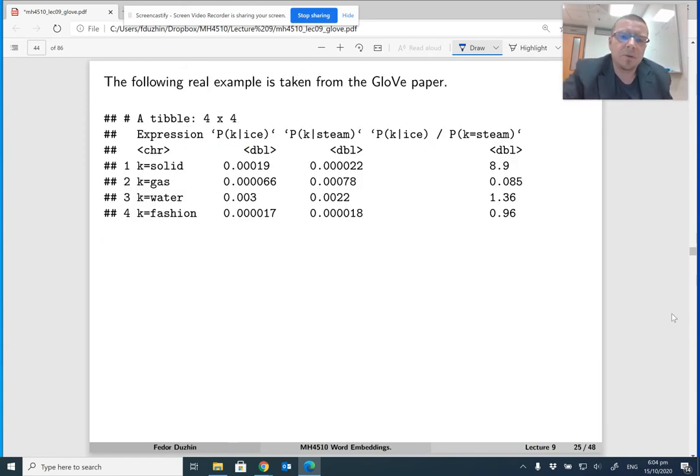So the following example is taken from the GloVe paper. So it takes a lot of time to produce it, so they trained GloVe on a large corpus, probably Wikipedia or something, I'm not sure. But the purpose of this example is to show that these elements of co-occurrence metrics and the probabilities, they somehow capture semantic meaning of the words.